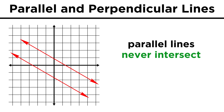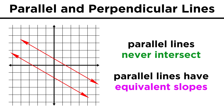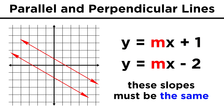Parallel lines are lines in the same plane that never intersect. In order for this to be the case, the lines must have the same ratio of vertical change to horizontal change. In other words, they must have equivalent slopes. Their equations will be different, but their slopes are identical.